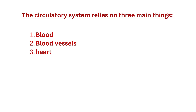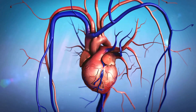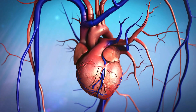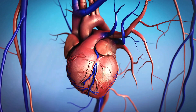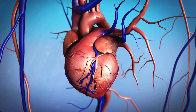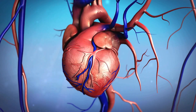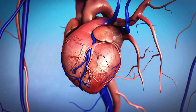The circulatory system relies on three main things: the blood, which carries all important oxygen and nutrients; the blood vessels, which carry blood throughout the body; and the heart, which pumps the blood. In this video we will take a closer look at the structure and function of the heart. Then in two separate videos we will take a look at the vessels and the blood.